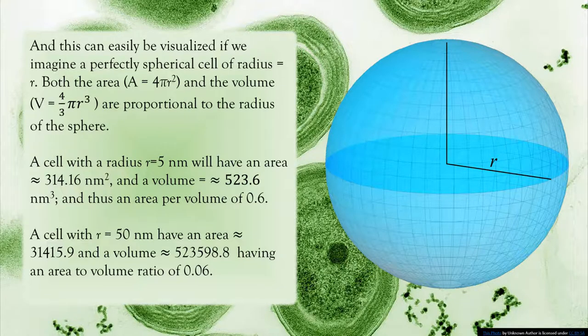A cell with a radius r=5 nm will have an area of approximately 314.16 nm² and a volume of approximately 523.6 nm³, having an area to volume ratio of 0.6.